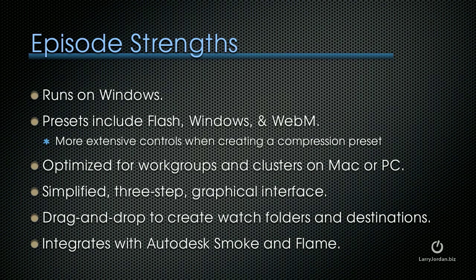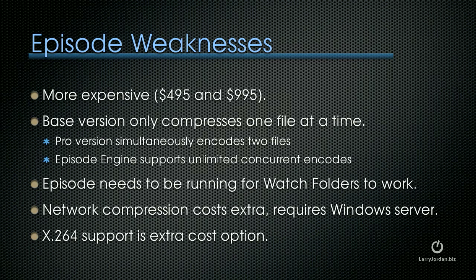Episode's strengths are that it runs on Macintosh and Windows, and its presets include Flash, Windows, and WebM. It has more extensive controls when creating a compression preset. It's optimized for workgroups and clusters running on either Macs or PCs. It has a simplified 3-step graphical interface and drag-and-drop to create watch folders and destinations. The latest version integrates with Autodesk Smoke and Flame. The weaknesses are that it's more expensive — starting at $495, with the Pro version at $995. The base version only compresses one file at a time. Episode needs to be running for watch folders to work. Network compression costs extra and requires a Windows Server. And x.264 support is also an extra-cost option.